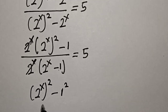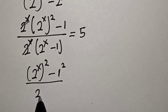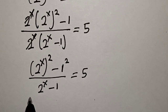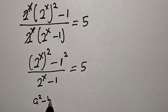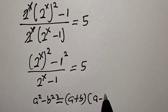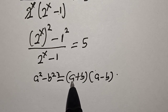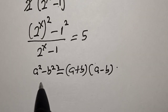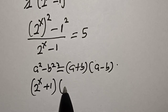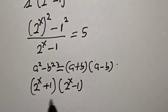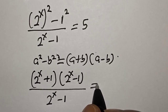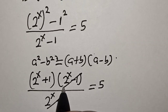We now have 2 raised to power x minus 2 raised to power x minus 1, is equal to 5. The numerator is a difference of squares — a squared minus b squared equals (a plus b)(a minus b). Substituting a = 2 raised to power x and b = 1, we get (2 raised to power x plus 1)(2 raised to power x minus 1) divided by (2 raised to power x minus 1), is equal to 5. The (2 raised to power x minus 1) cancels.